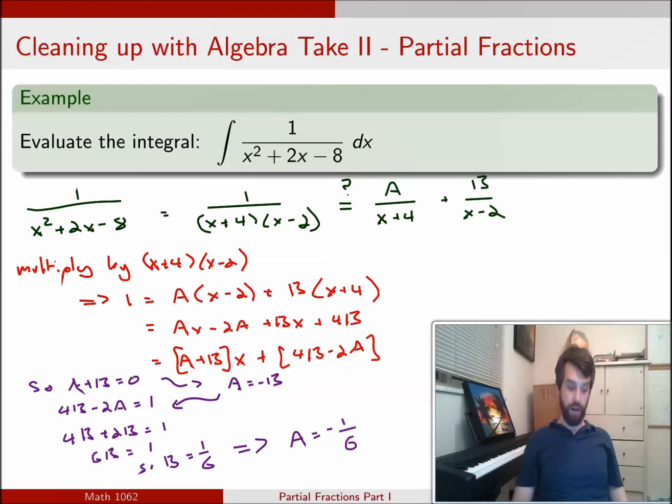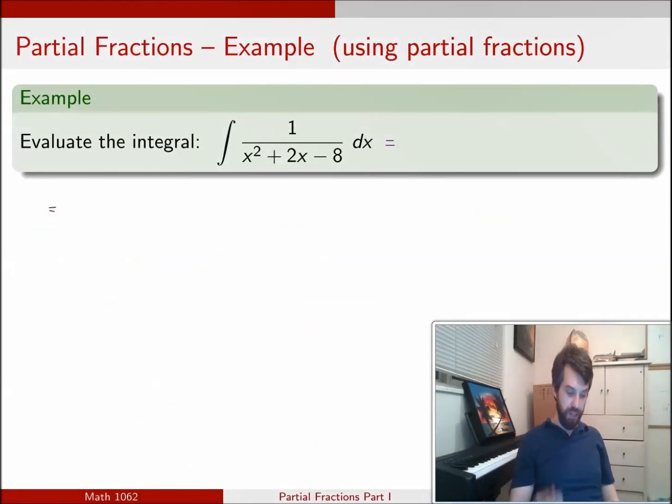So now let's try to integrate. So we figured out how to deal with this integrand, so let's wrap it in the integral signs. We decided that this was going to be minus 1 sixth, that was the A, and then underneath the A was an x plus 4. And then also there was a 1 sixth for the B, and it was an x minus 2, and all of this dx.